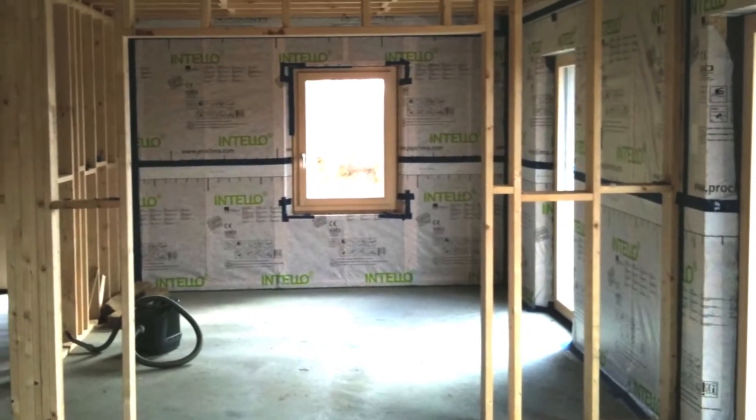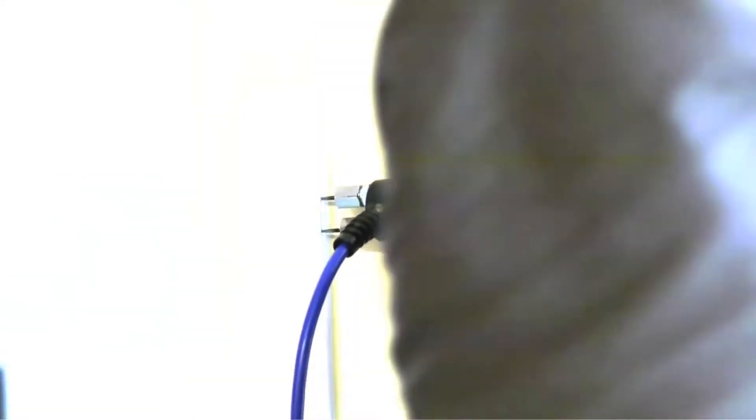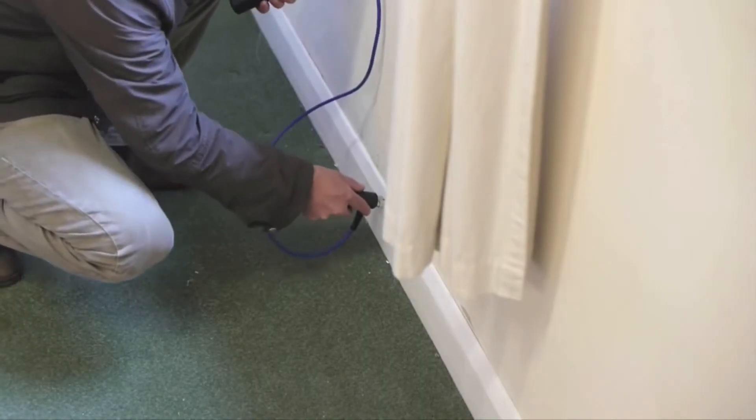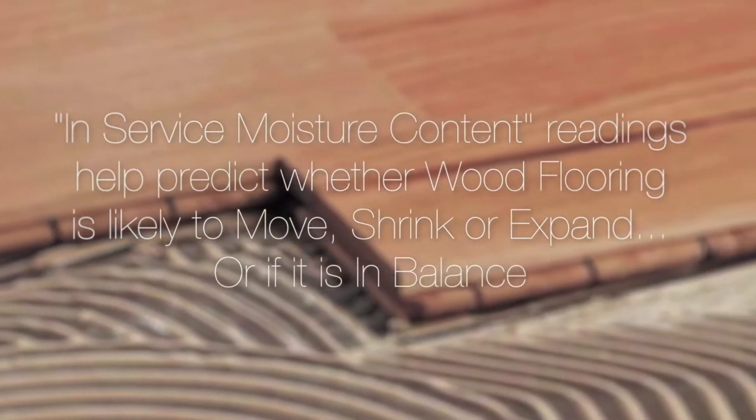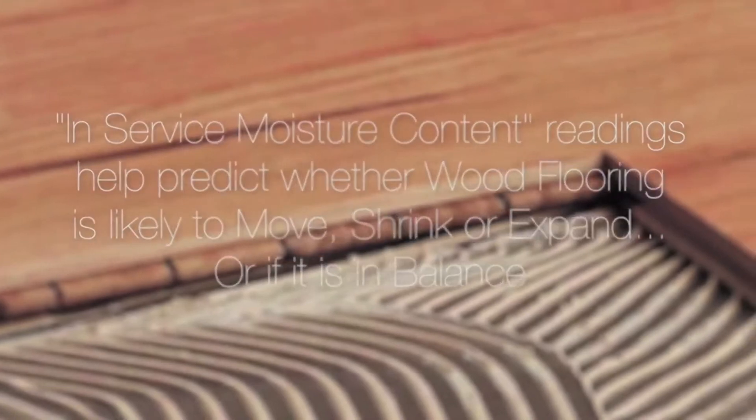Another way of identifying when wood is in balance with the building is to discreetly take moisture content readings from wood somewhere already in service within the building. By taking this in-service moisture content reading, it is easier to predict if the wood floor covering is likely to move, to shrink or expand, or if it is in balance.